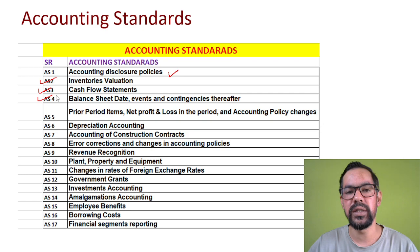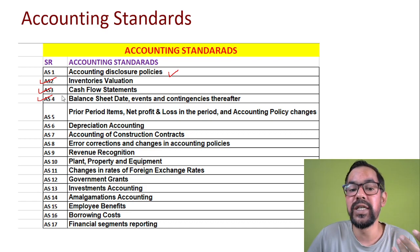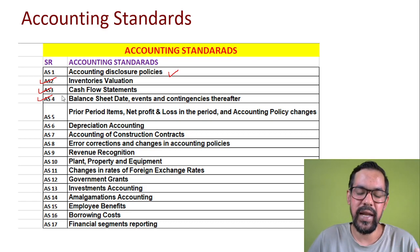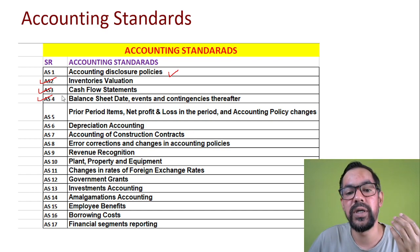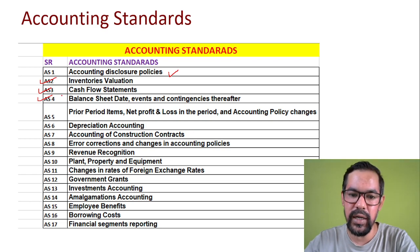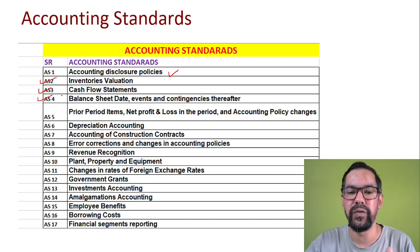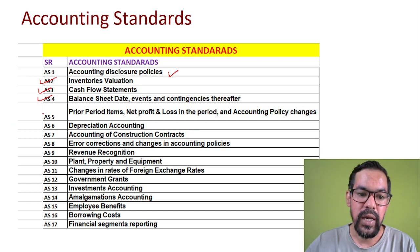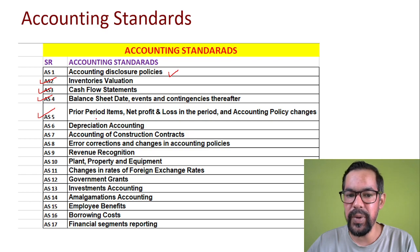The fourth accounting standard is Balance Sheet Date Events and Contingencies. It covers the treatment of contingencies in your company — treatment of financial statements. Any future gains or losses, or events after or before the balance sheet date — all these kinds of treatments are generally part of Accounting Standard 4.